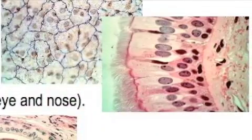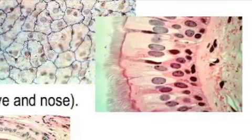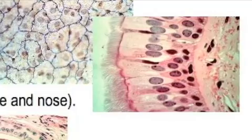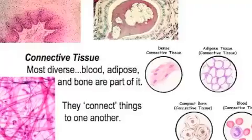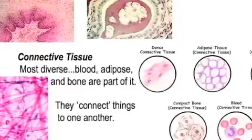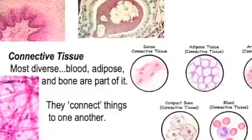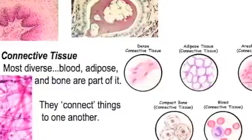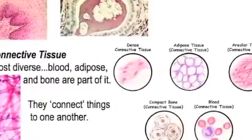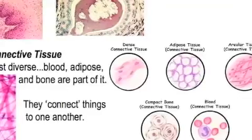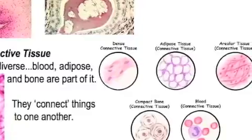Looking at the slides, the one on the top left is a lung slide, and the slide to the right is found in our trachea, which is our windpipe. Finally, connective tissue is the most diverse of them all. It includes blood, adipose tissue (which is fat tissue), and bone. You've got blood as a liquid and bone that's completely solid — what they share is that they connect things to one another. That is their job.